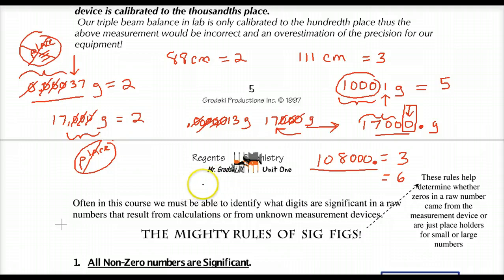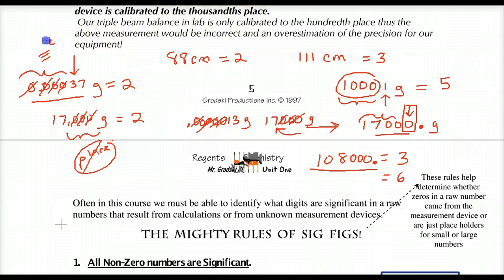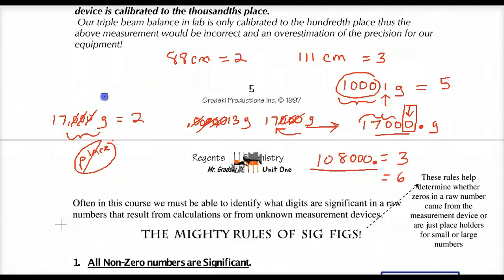It's very important that we think about what we put down on paper — the numbers we write down should reflect the precision of the device accurately. You can't overestimate or underestimate the precision of the equipment.